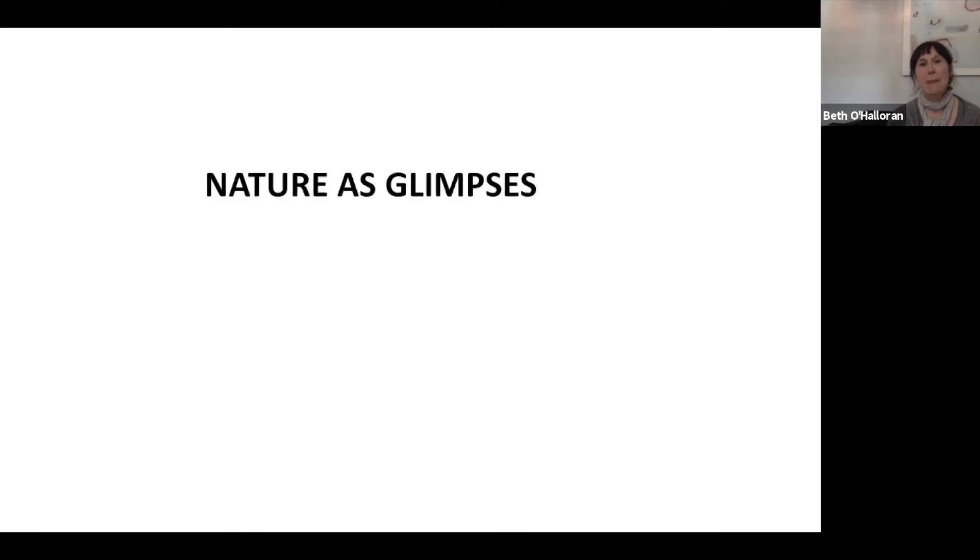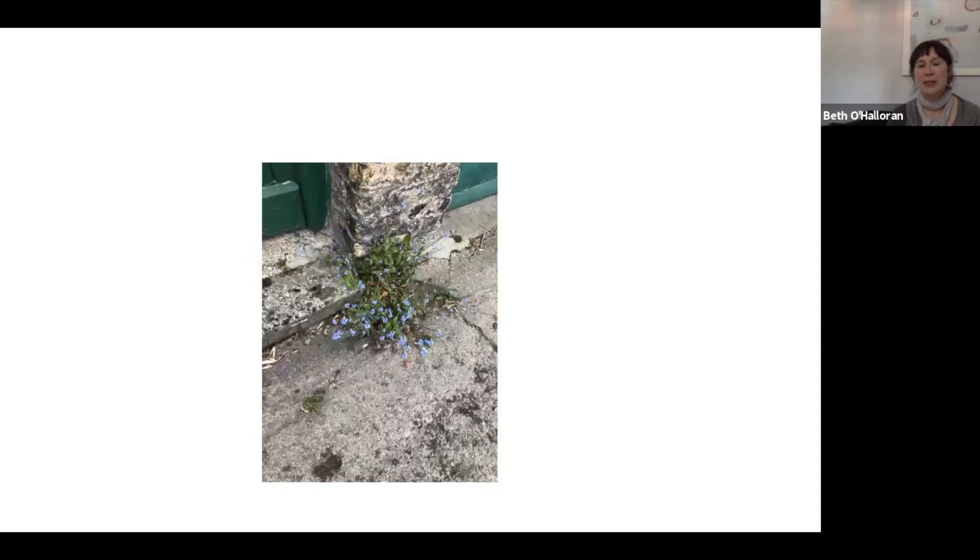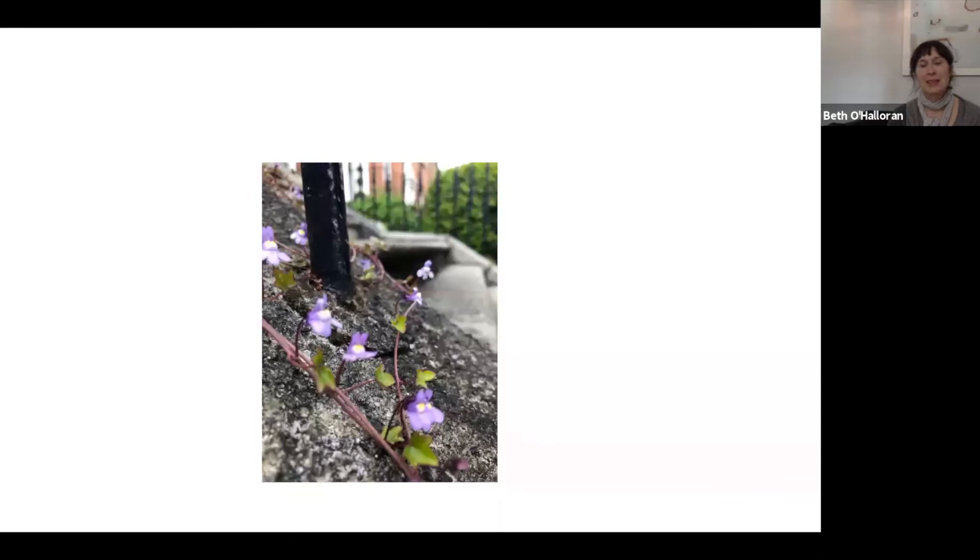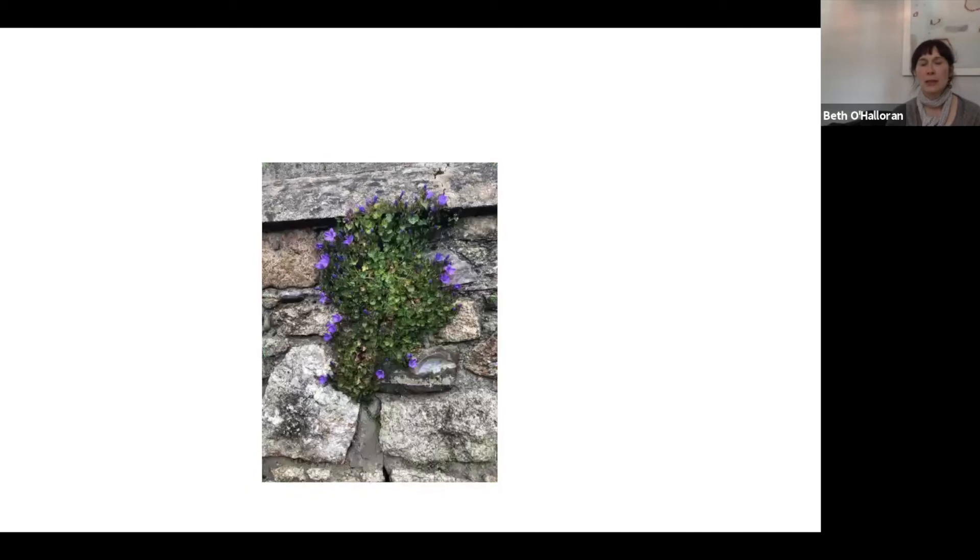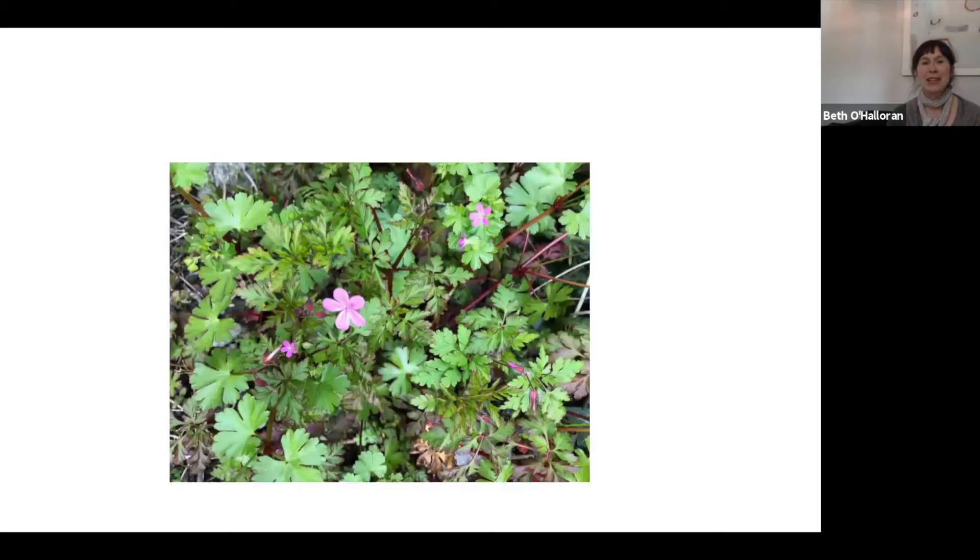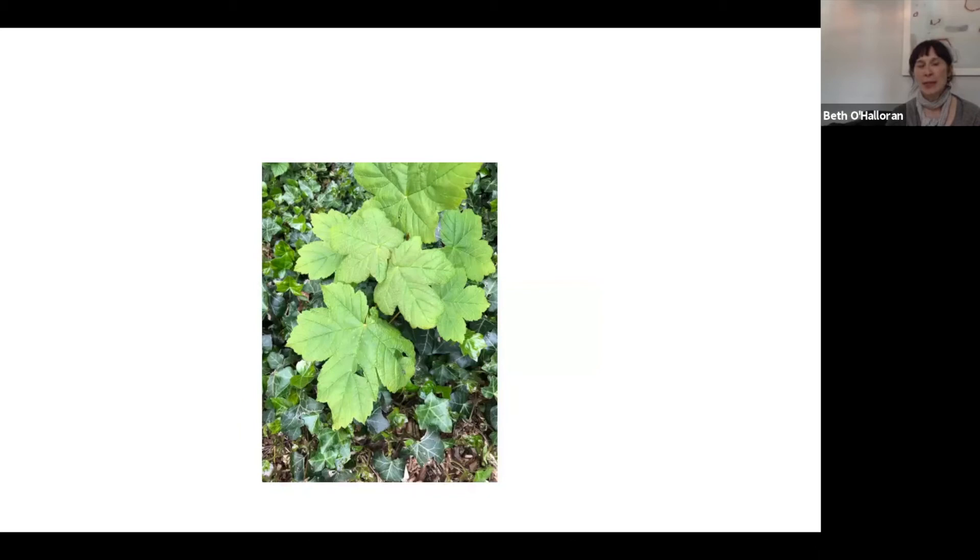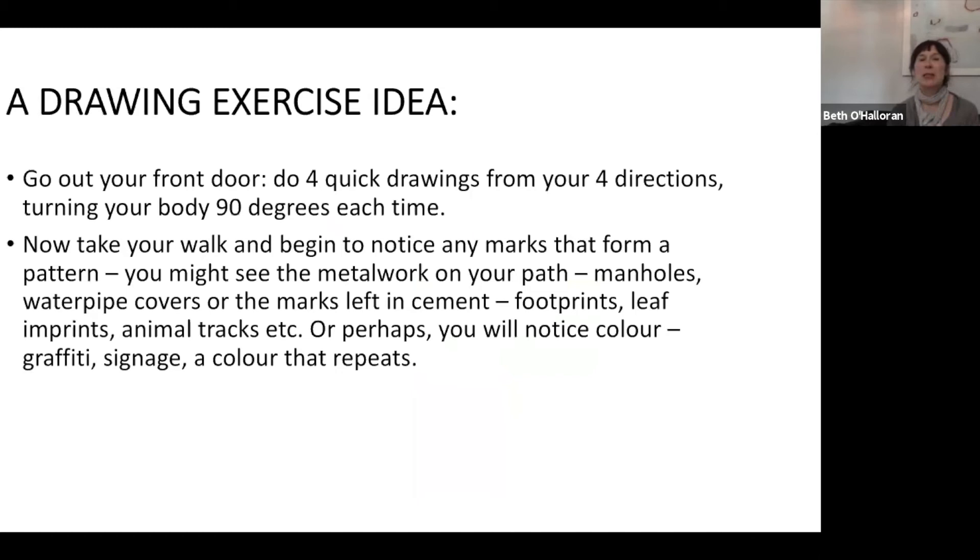Record five journeys in five ways. Some questions you might ask yourself are, how can you record a route that you've already taken? Notice what elements help you to orientate yourself. Is it the architecture? Familiar trees? Here's some of my pieces that I'm hoping will inspire you. I've put this series as nature as glimpses, little scraps of nature. Some little forget-me-nots. Little tiny violets growing up a wall. Go out your front door and do four quick drawings from four directions.